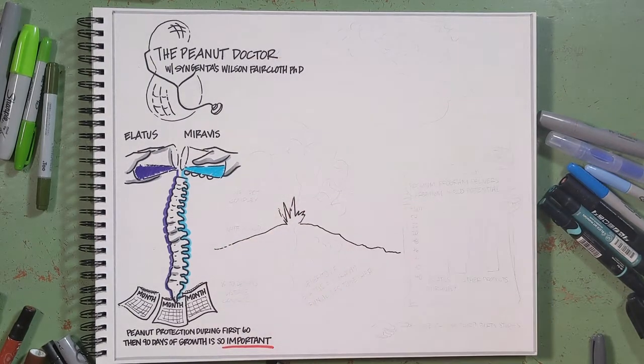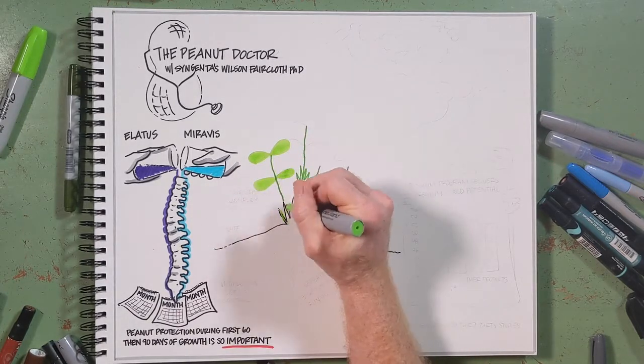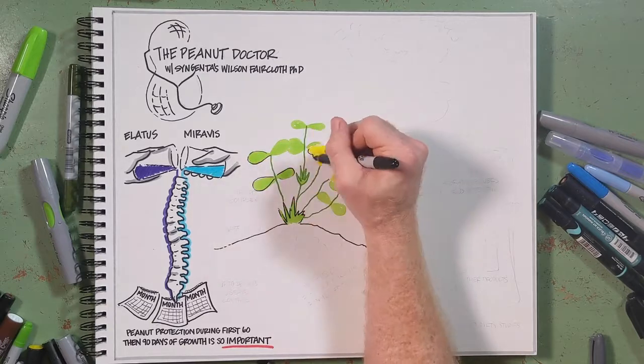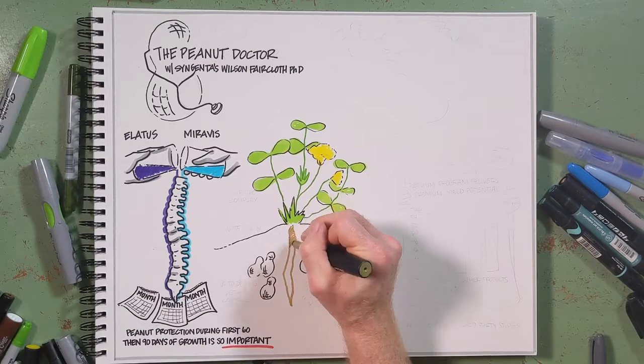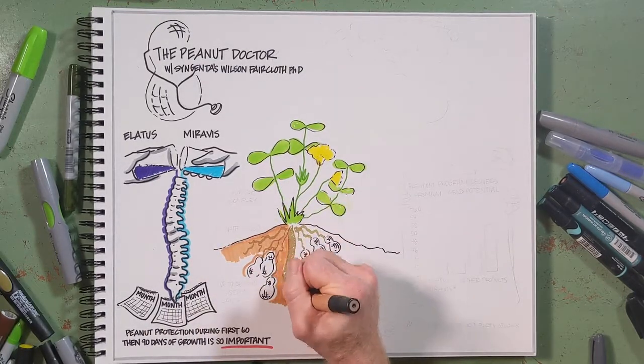During this time the peanut is at its full growth potential. It's flowering, putting on lots of foliage and vine growth, but at the same time it's putting down pegs and those pegs will eventually become pods. Pods are what matter. Yield matters the most. It's how we pay the bills.